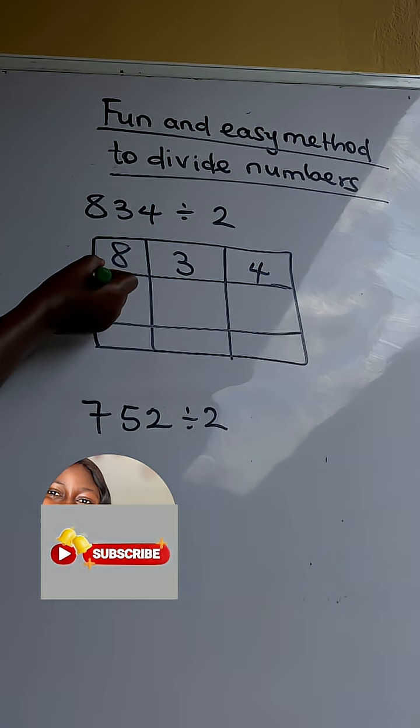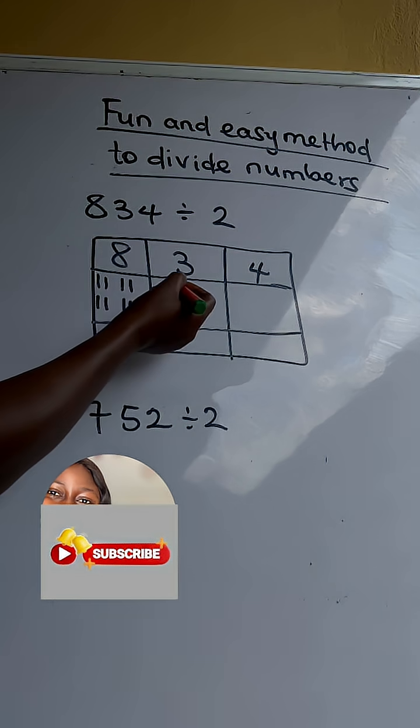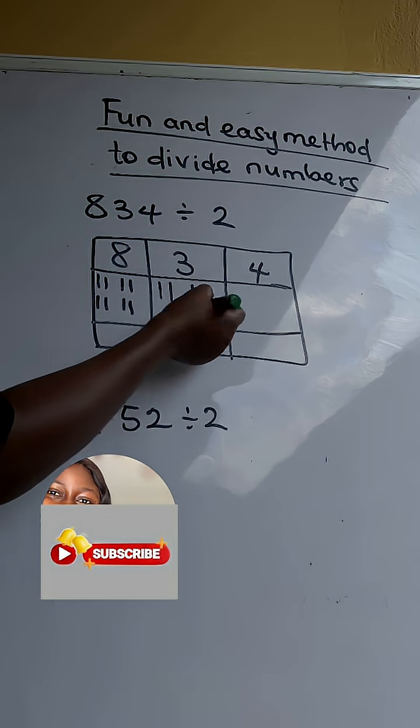So now for 8 we are going to count it in two places: 1, 2, 3, 4, 5, 6, 7, 8. For 3: 1, 2, 3.